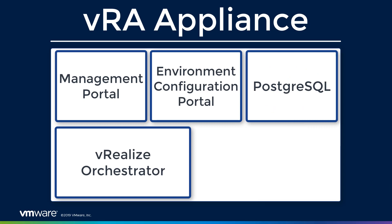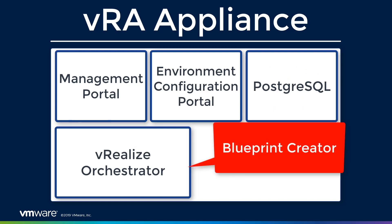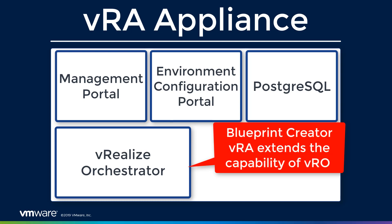We then have VRO, which is our VRealize Orchestrator. VRO is a general runbook or blueprint creator. We can go through the process of defining each single step in a process so we can automate it. VRA layers on top of it and extends the capabilities and functionality of VRO. So instead of having to define each single step along the way, we can say we need to create a virtual machine, and VRA knows those steps to pass over to VRO.